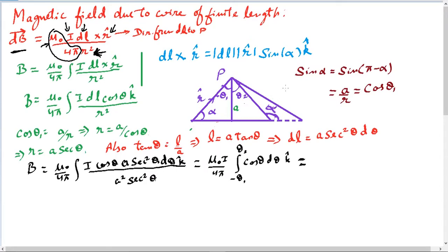I am going to take a wire from point A to point B, and this is its length. To find the total magnetic field I am going to integrate both sides. The integral of dB is just B, and mu naught over 4 pi is a constant so it comes out of the integral, leaving me with the integral of i dL cross r-hat over r squared.